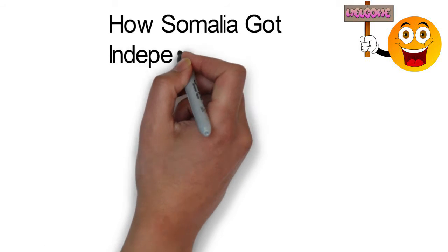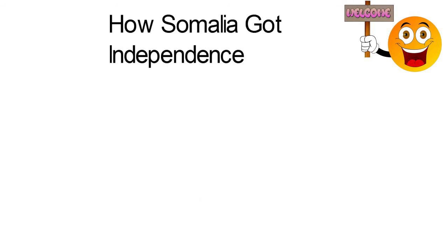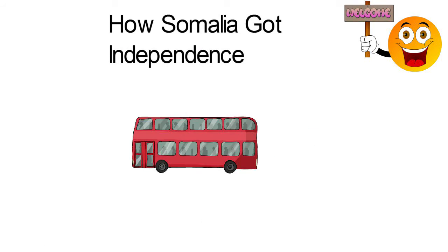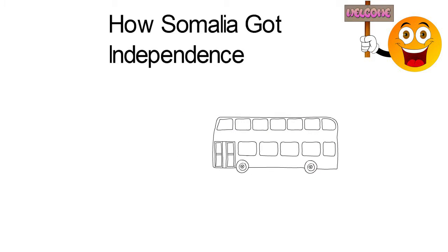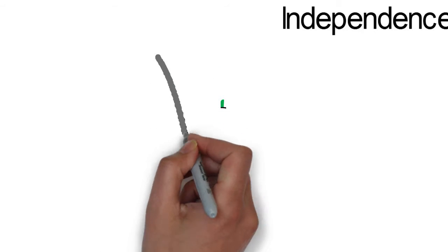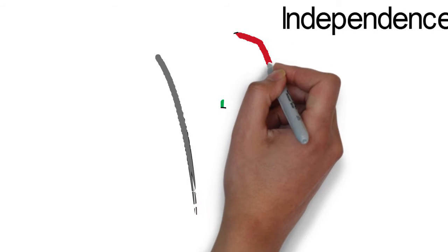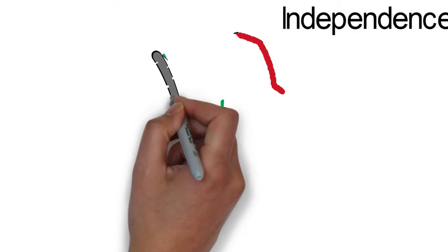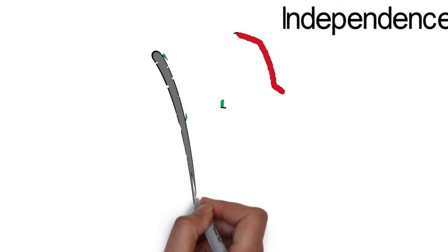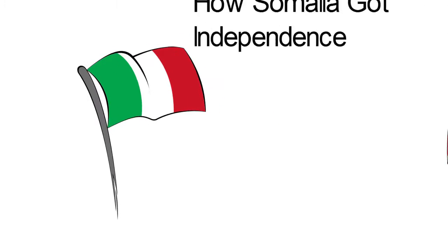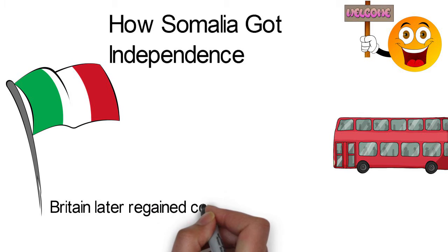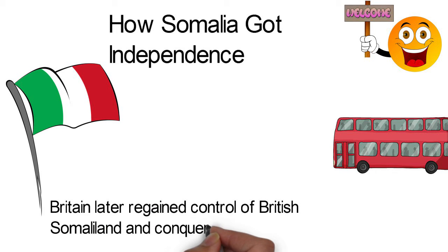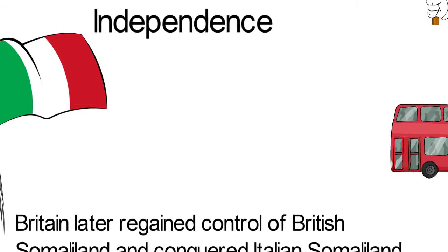How Somalia Got Independence. In 1940, when Italian troops invaded British Somaliland and ejected the British, the invading Italians occupied major parts of the British East Africa Protectorate, bordering Jubaland around the towns of Moyale and Buna. Britain later regained control of British Somaliland and conquered Italian Somaliland.